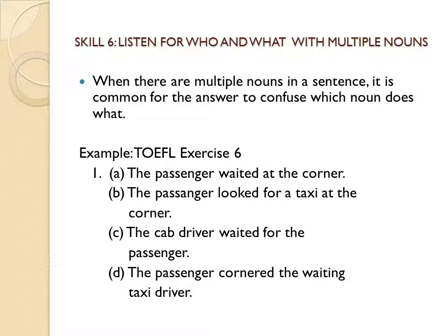Skill 6: listen for who and what with multiple nouns. When there are multiple nouns in a sentence, it is common for the answer to confuse which noun does what. For example, in TOEFL exercise six — Man: 'The passenger arrived in a taxi.' Woman: 'Yes, and she had the taxi driver wait at the corner.' The question: 'What does the woman mean?' The answer is C, because there are multiple nouns in the sentence: she had the taxi driver wait.